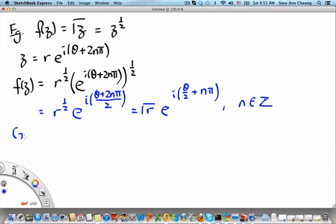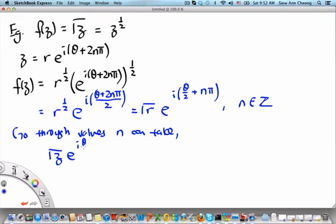Now, if you go through the different values that n can take, you'll find that you end up with two different functional values. You either end up with √r × e^(iθ/2) for n = 0, 2, 4, 6, and in general, even integers...